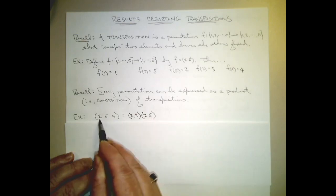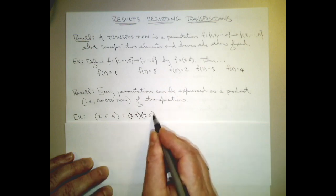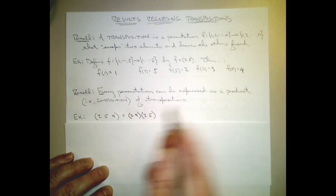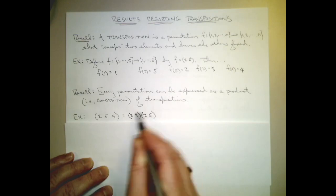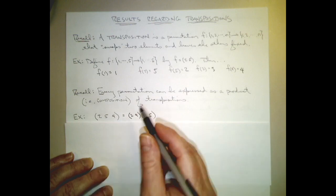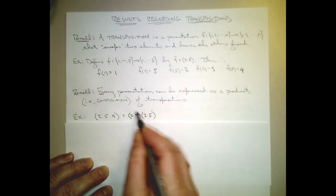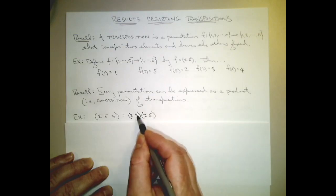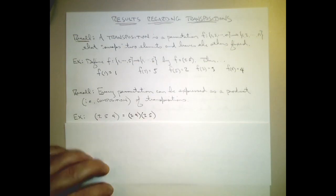That's exactly what this function does - 2 goes to 5. Similarly, 5 goes to 2, but then this function picks 2 up and sends it to 4. So all in all, 5 gets sent to 4, which is exactly what this permutation does. And finally, 4: this function fixes 4, and this function sends the result 4 to 2. So 4 goes to 2, which is exactly what this cycle did as well.